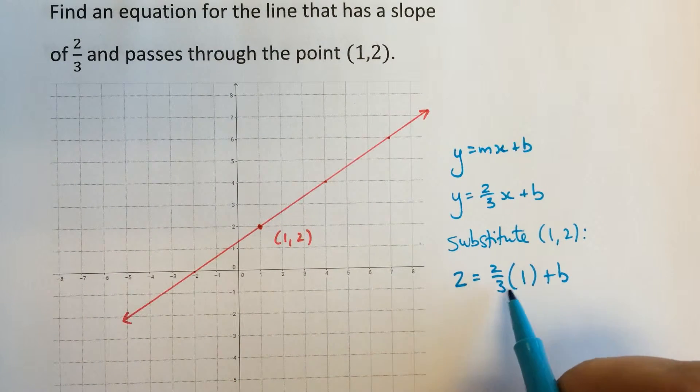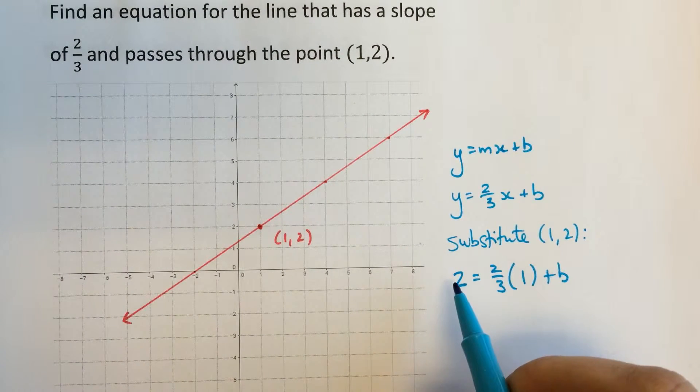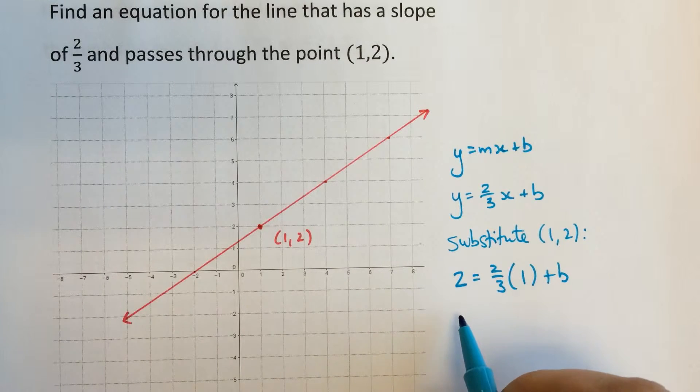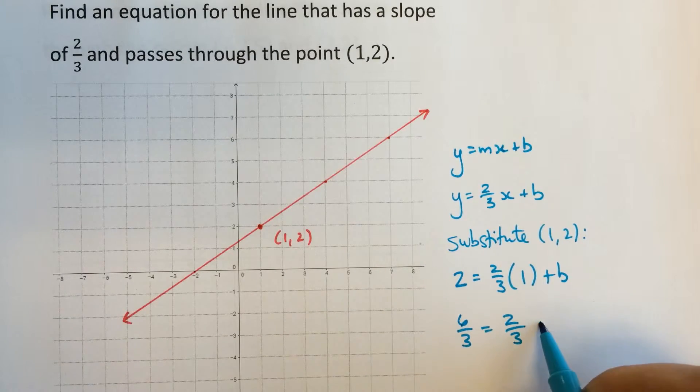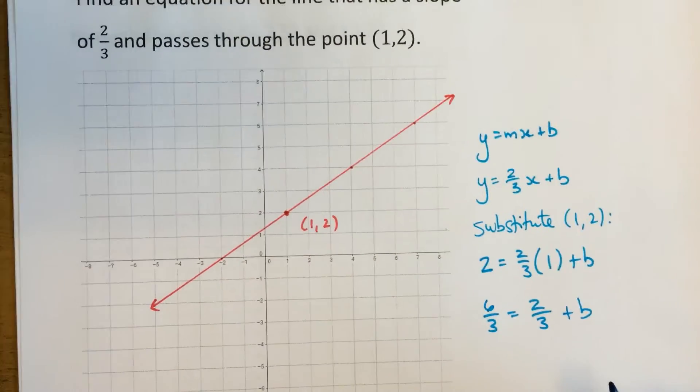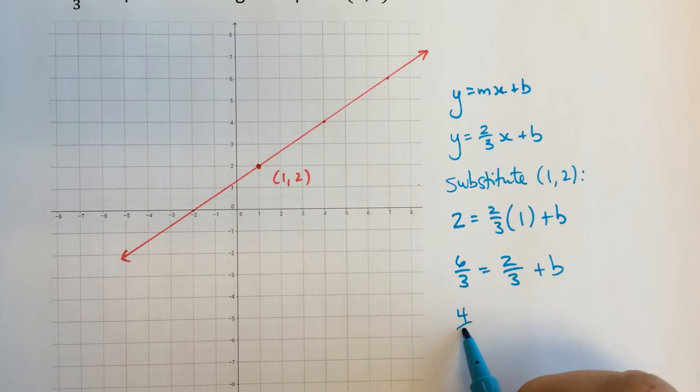So over here, I'm going to end up with two-thirds on this side. So I'm going to change this two into six-thirds because I know I'm going to have to have a common denominator in a minute. Subtracting two-thirds now from each side of the equation, I get four-thirds equals b.